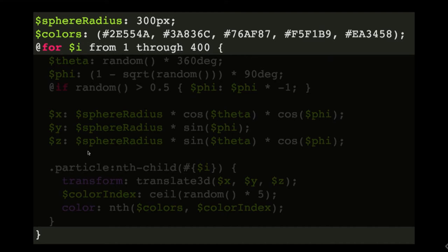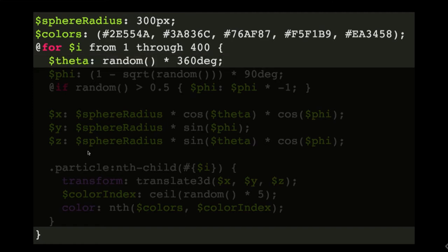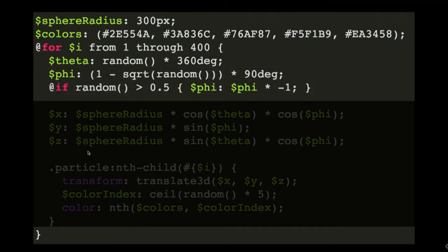For each particle, we will calculate random values for theta and phi to randomly position them along the ball. We are using the CSS random function to get a value from 0 to 360 degrees for theta. We are also using the CSS random function for phi, but with a little bit more complex function in order to ensure we have a fair distribution along the ball.